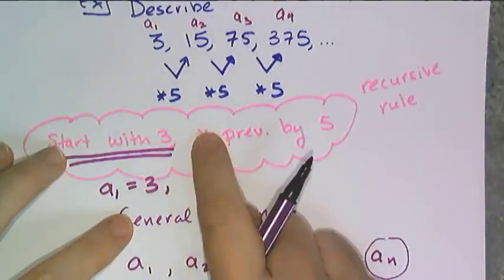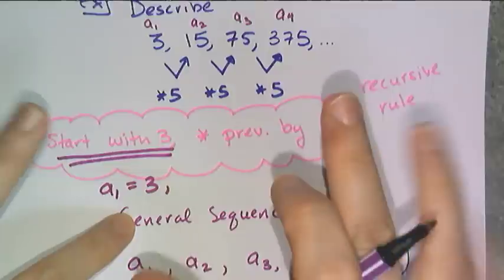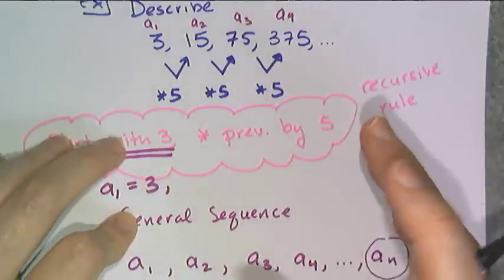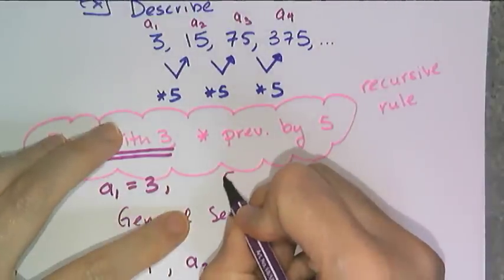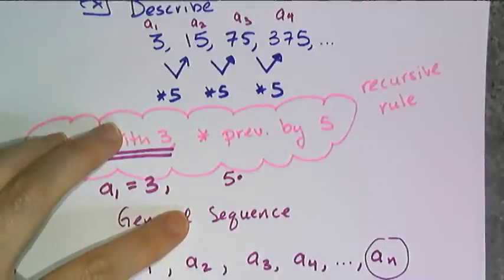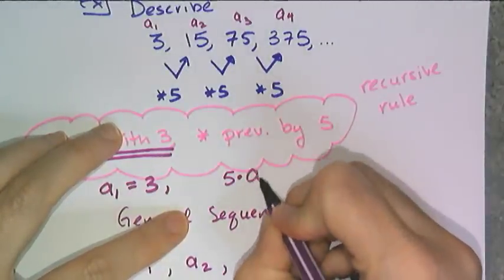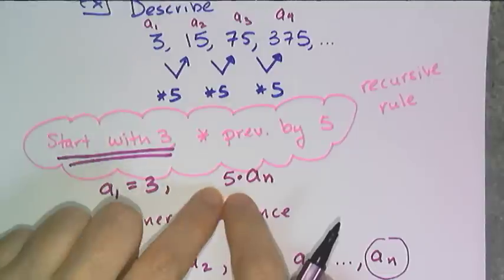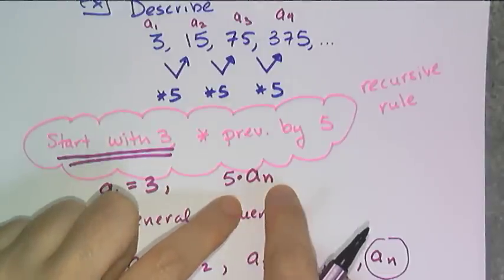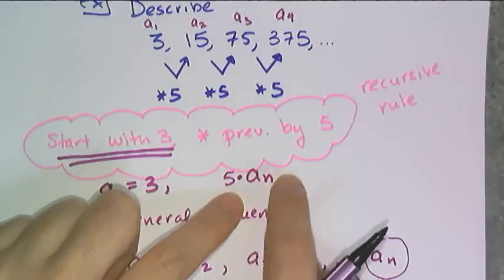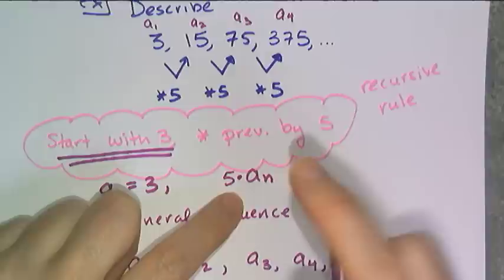And it says multiply previous by 5. And this is the part that's a little bit different. Well, I know I have to have 5 times for multiply previous by. And if I say just some general term, I multiply some term by 5. Well, I have to somehow indicate that a sub n is the previous term.